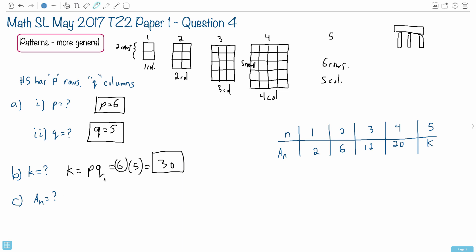In other words, whatever you have here better work for if you put in n equals 1, you better get 2. If you get n equals 2, you better get 6 and so on.